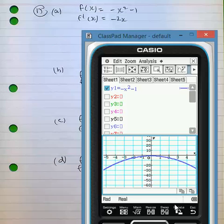In the case of 15a, the classic negative x squared minus 1, the turning point will be at (0, -1). You can see the classic formation there.